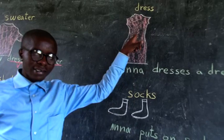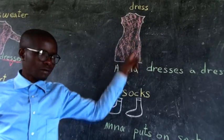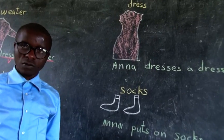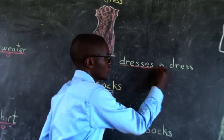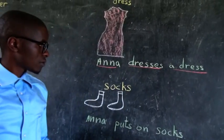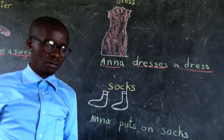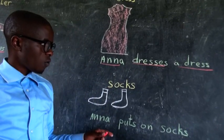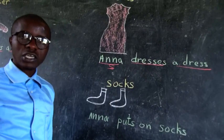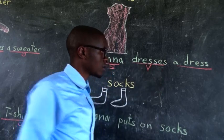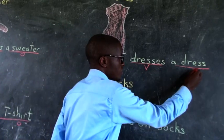What is this? This is a dress. To make a sentence, you can say: Anna dresses a dress. As I said, a sentence should have three main parts. Someone who does an action is Anna — the subject. The action is to dress. Something which receives an action is a dress — the object.